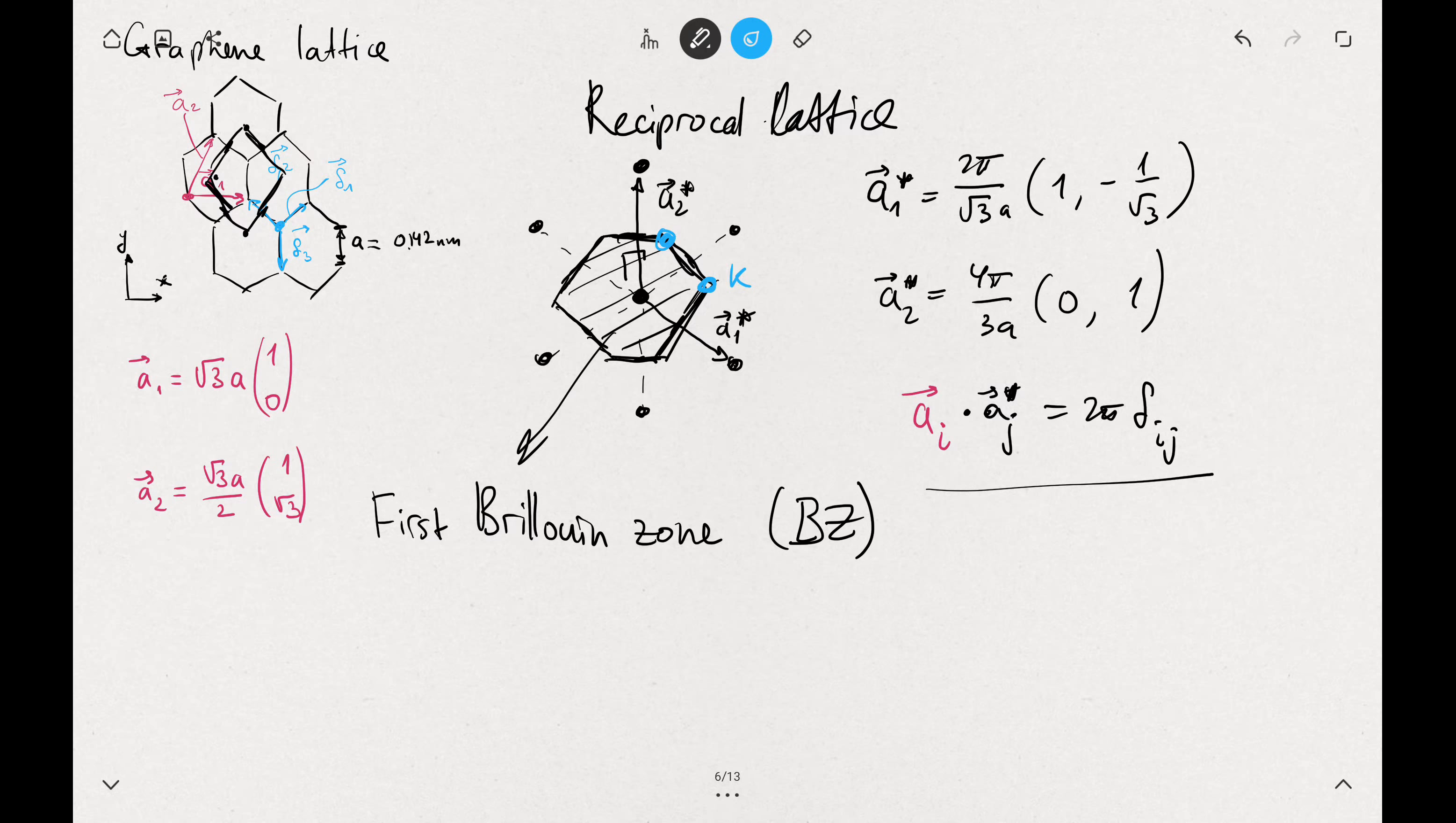The one which is on the left you can label K, and this one will be K prime. And those are the only different K points. All other points you can generate by translating using these two vectors. So these two vectors would allow you to transition from K to K prime and so on.